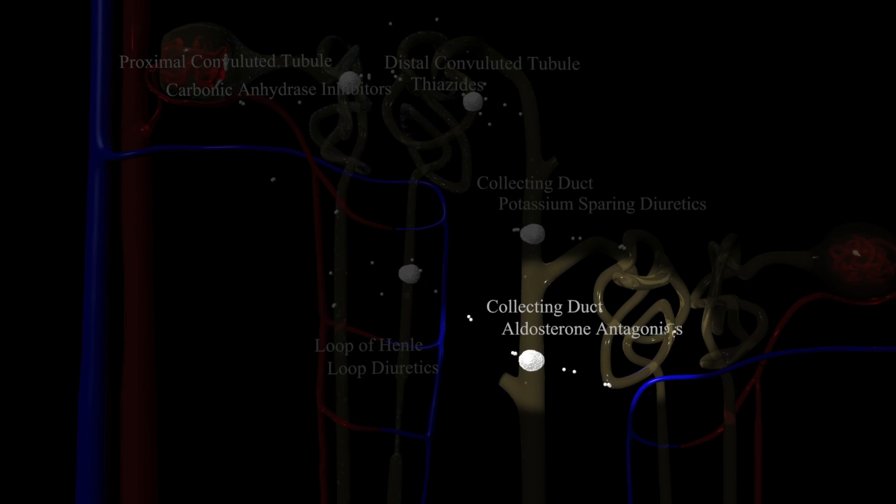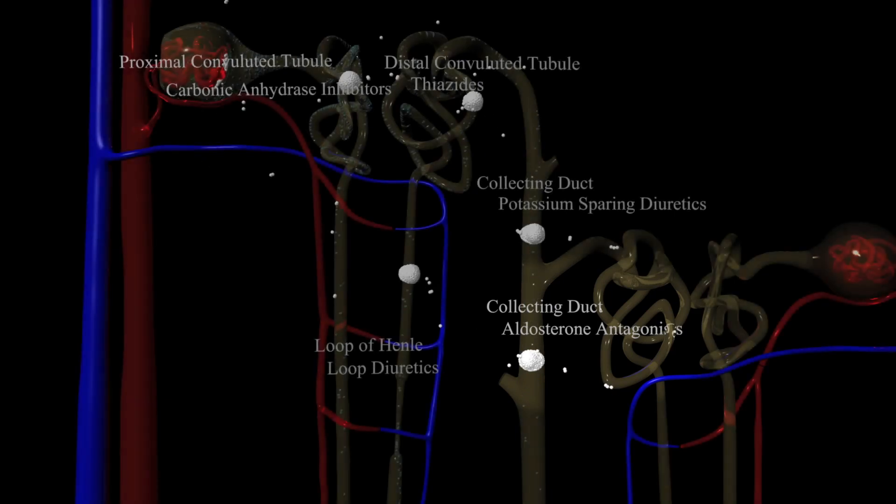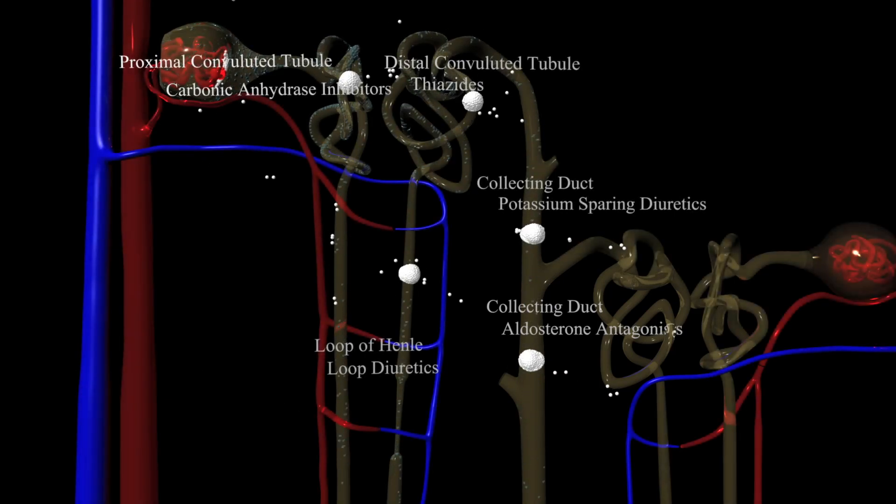Here, in addition to potassium-sparing diuretics, the collecting duct also utilizes aldosterone to allow sodium to leave the nephron. Aldosterone antagonists will block that reaction.